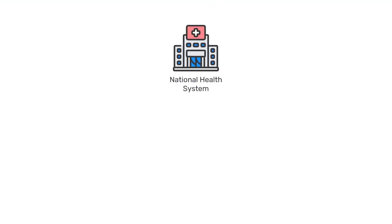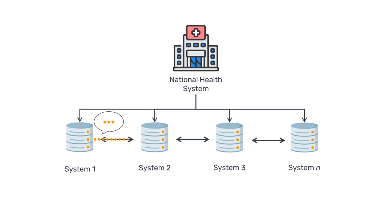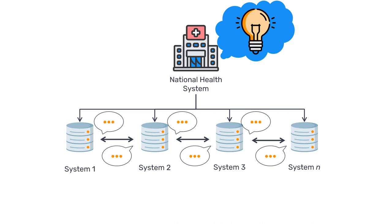It is common for a national health system to have a digital architecture composed of several information systems and applications that serve complementary functions. These systems may need to exchange information or talk to each other to reduce duplicate storage of data and help bring data from different sources together in a holistic way rather than keeping it in silos. This helps decision makers to obtain a broader, more detailed picture of what is happening in the health system as a whole and can also improve the operational efficiency of each individual system.